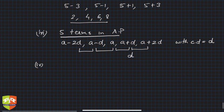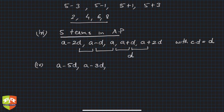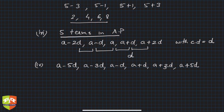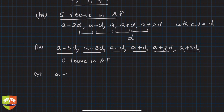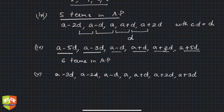For six terms in AP, we use a minus 5d, a minus 3d, a minus d, a plus d, a plus 3d, and a plus 5d. Whenever there are an even number of terms, we use odd multiples of d — a minus an odd multiple of d or a plus an odd multiple of d. Similarly, seven terms in AP are: a minus 3d, a minus 2d, a minus d, a, a plus d, a plus 2d, and a plus 3d.